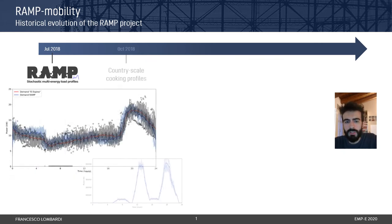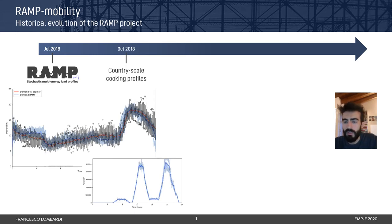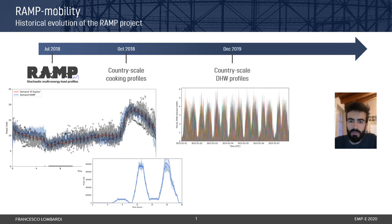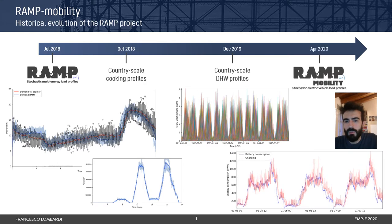But soon we realized that the approach was versatile enough to be applied to any kind of user-driven demand profile, and so we came out with cooking profiles or domestic hot water profiles even at the country scale. And finally this year we realized it was time for a Ramp Mobility application.